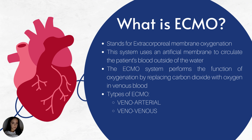There are two types of ECMO: veno-arterial and veno-venous. Veno-arterial ECMO is for patients who have cardiogenic shock, circulatory failure, and have issues with both their heart and lungs. For VV ECMO — veno-venous — this is for patients who just have issues with the lungs. No cardiac issues; they have a normal ejection fraction, no cardiogenic shock component. Their heart is strong, but they have lung deterioration and respiratory failure.